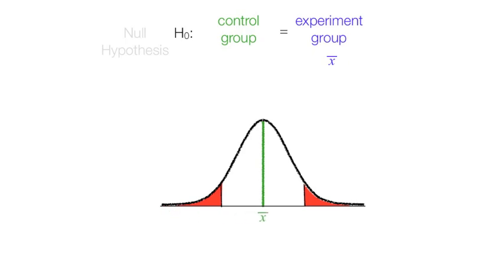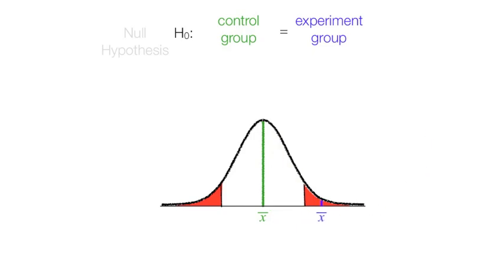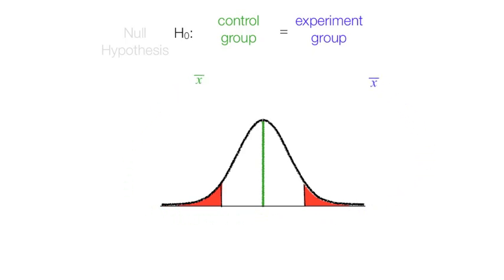Ultimately, I will compare the mean of the control group with the mean of the experimental group to see how far apart they are. We want to see how far away the mean of the experimental group is from the control group. The way we do this is by computing a t-statistic.